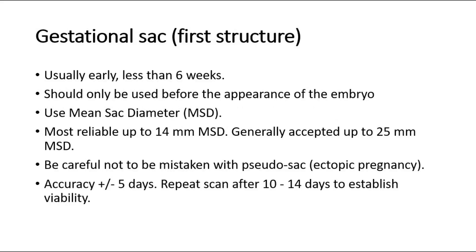The gestational sac will be the first structure to be seen. It is usually seen early, less than 6 weeks. It should only be used before the appearance of the embryo. Use mean sac diameter (MSD). Most reliable up to 14 mm MSD, and generally accepted up to 25 mm MSD. Be careful not to be mistaken with pseudo-sac, which suggests ectopic pregnancy. Accuracy is plus or minus 5 days. Repeat scan after 10 to 14 days to establish viability.